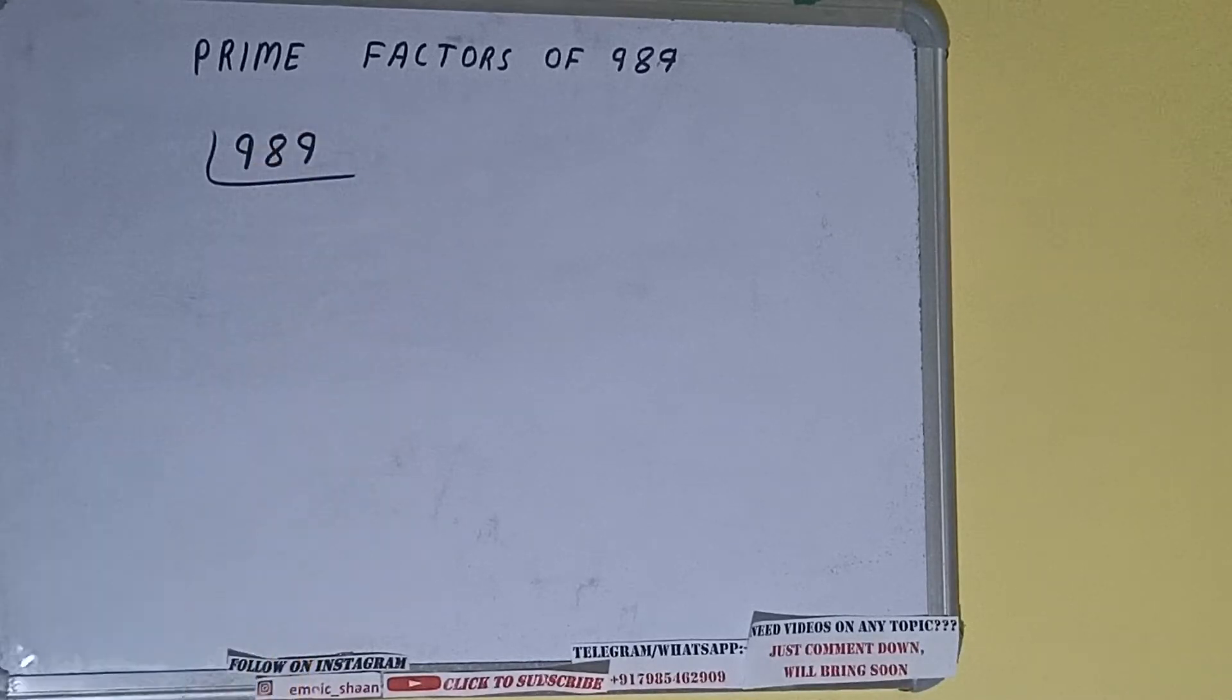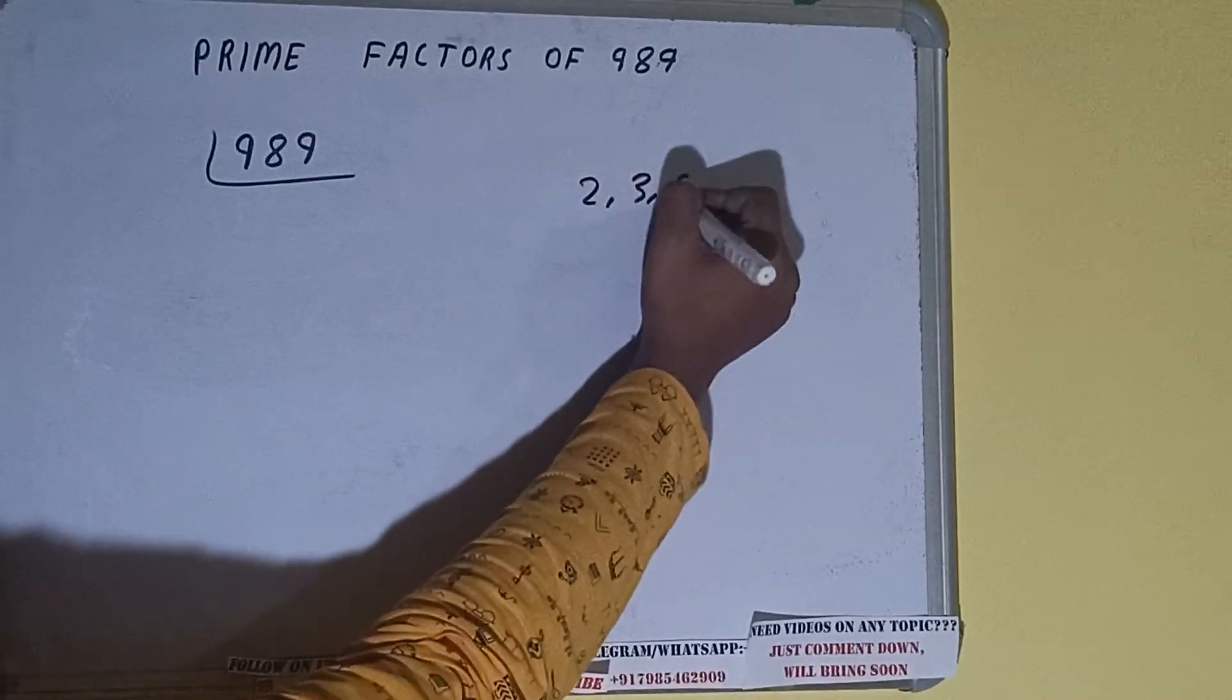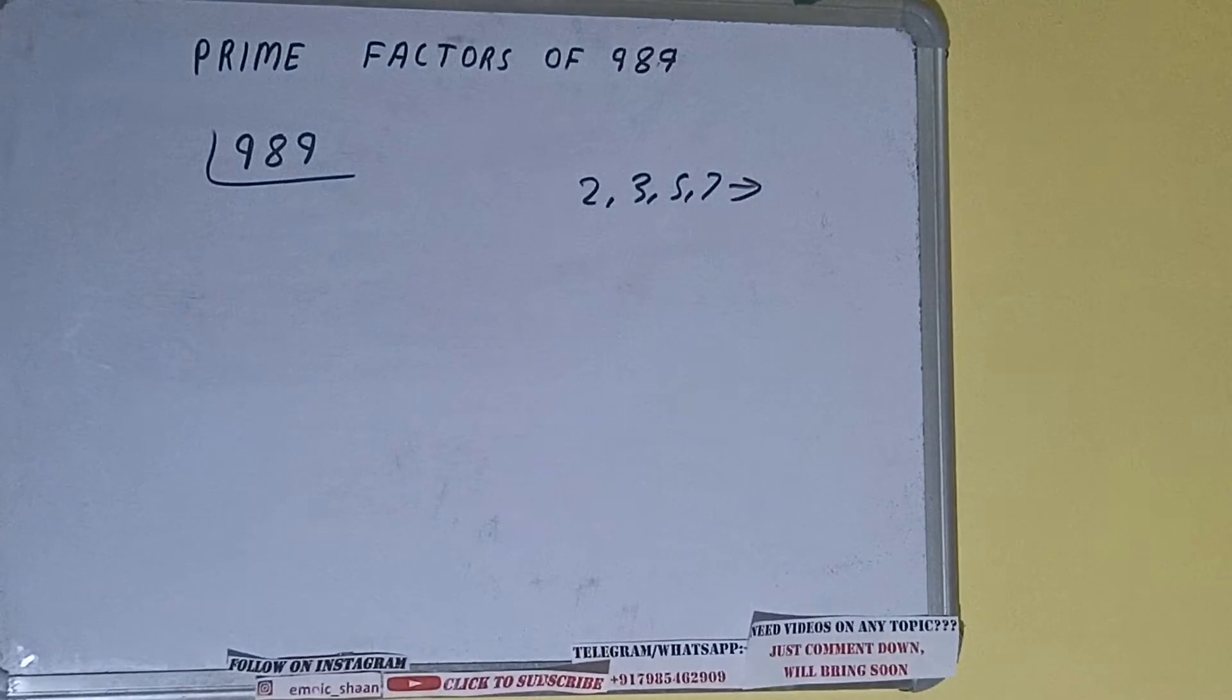The next thing we need to know about is what are prime numbers. Prime numbers are numbers that are divisible by 1 and the number itself, like 2, 3, 5, 7, and so on.